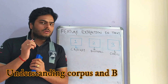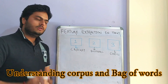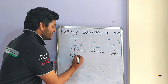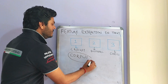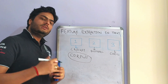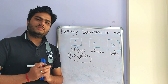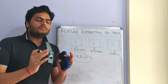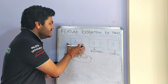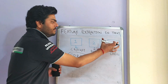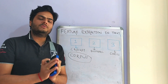When we talk of feature extraction in text, there are a few things we need to understand. First, what is a corpus? Corpus is a very frequently used term in the world of text analytics. A corpus is nothing but a combination of all your text data. So in this case, whatever text is written in all three PDFs — that entire text becomes our corpus.